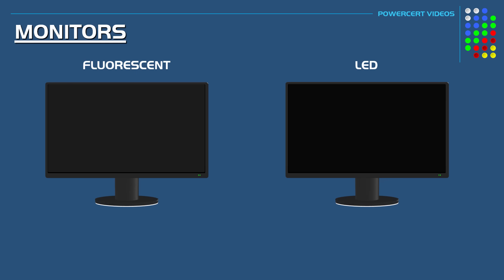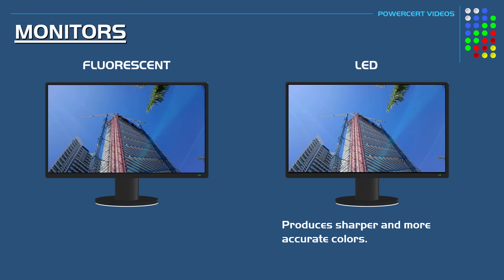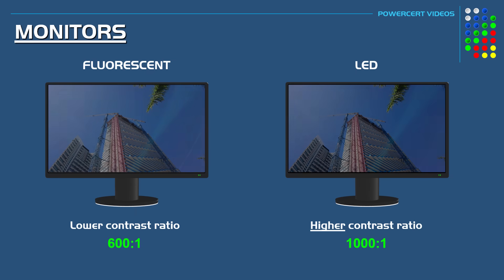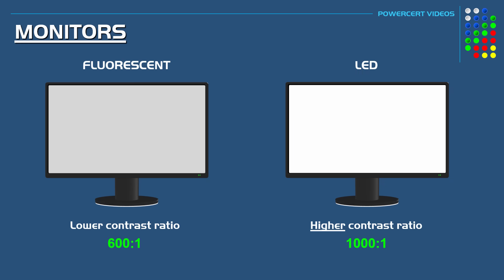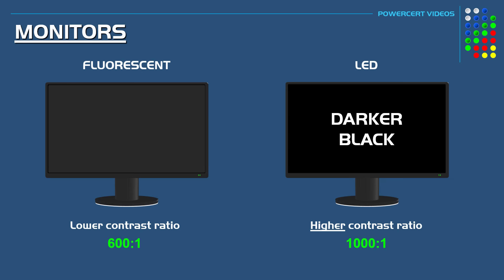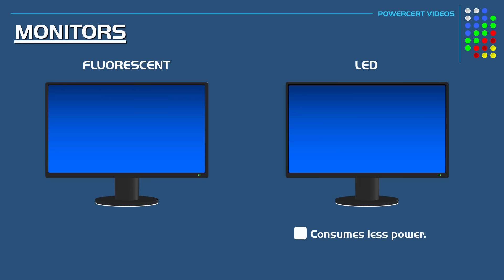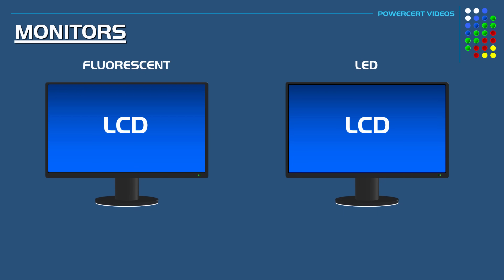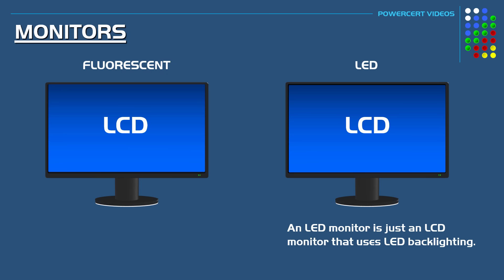The advantages of LED monitors over standard LCD include sharper and more accurate colors, and a higher contrast ratio. The contrast ratio refers to the contrast between black and white — the higher the ratio, the better, because it can produce a brighter white and a darker black. For example, a contrast ratio of 1000 to 1 means the whites are 1000 times brighter than the blacks. LED monitors also consume less power and can be made with a thinner form factor. Both are considered LCD monitors, but the one using LED backlighting is called an LED monitor.